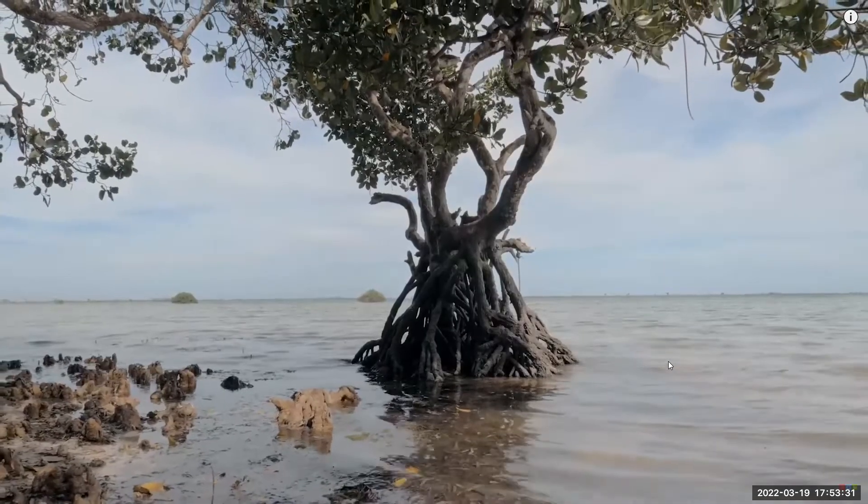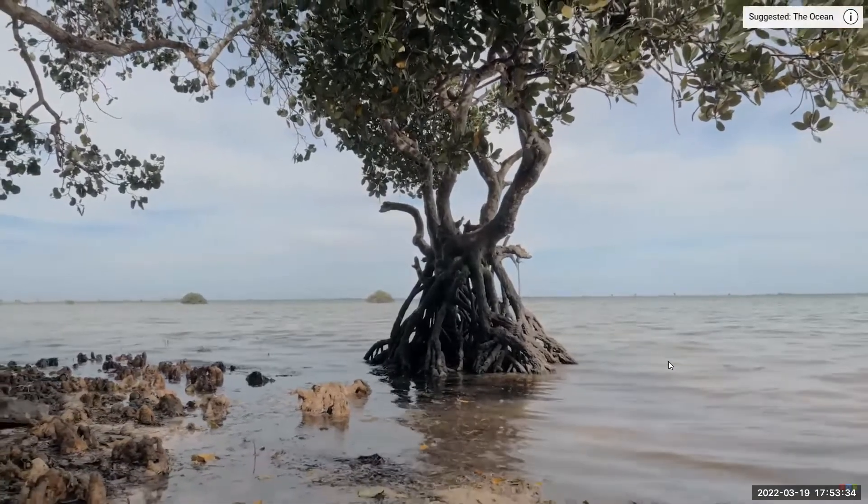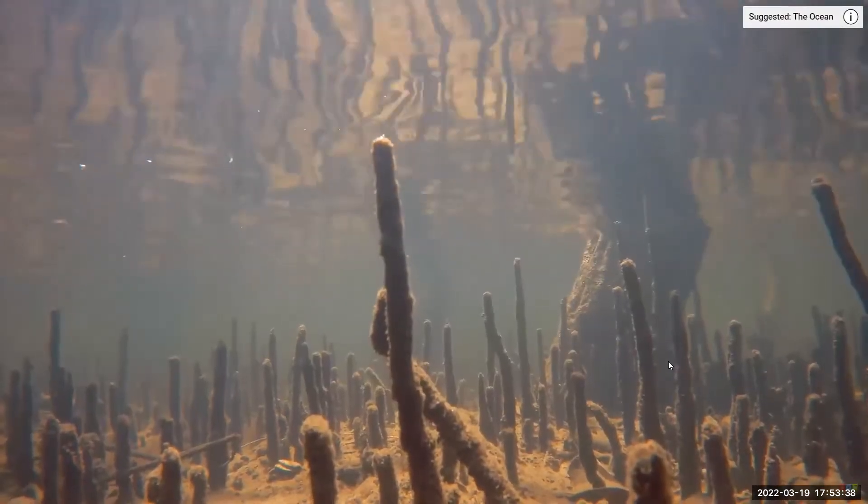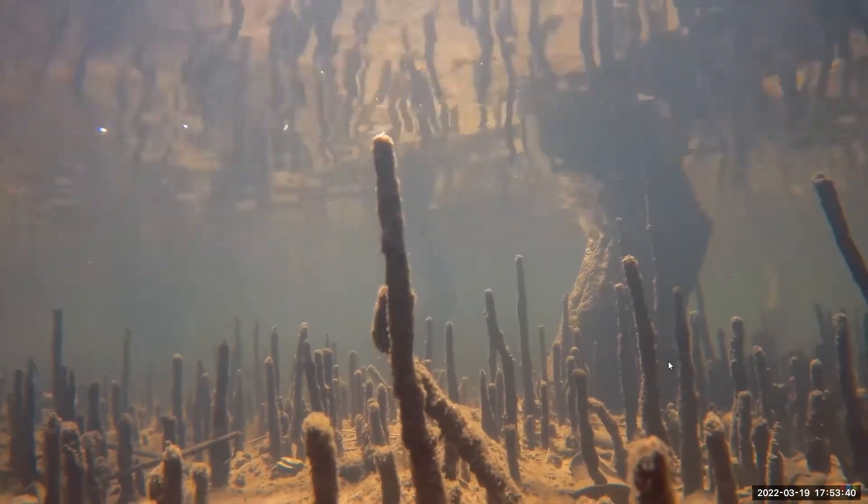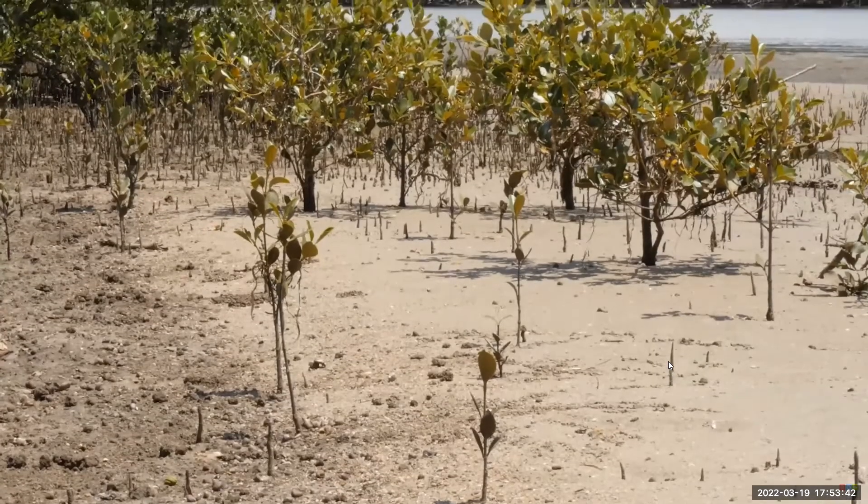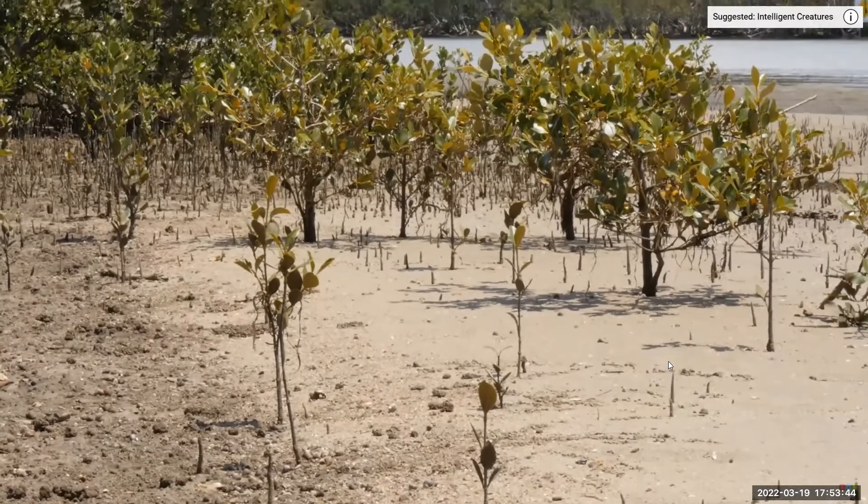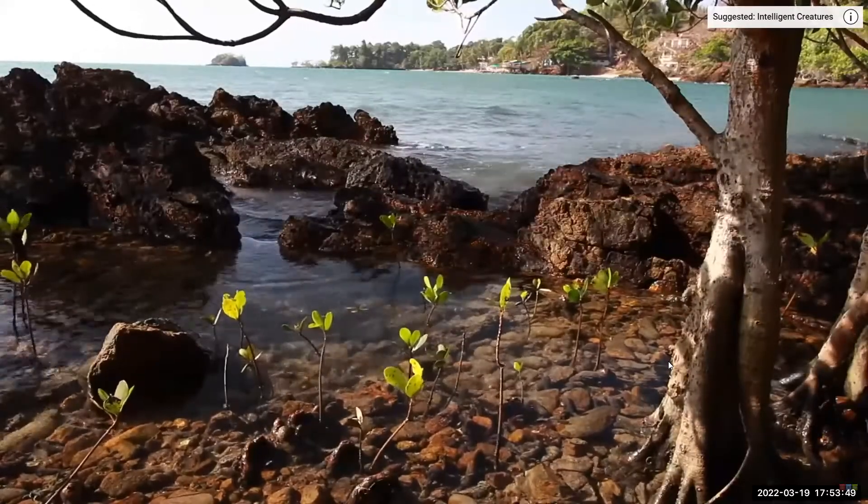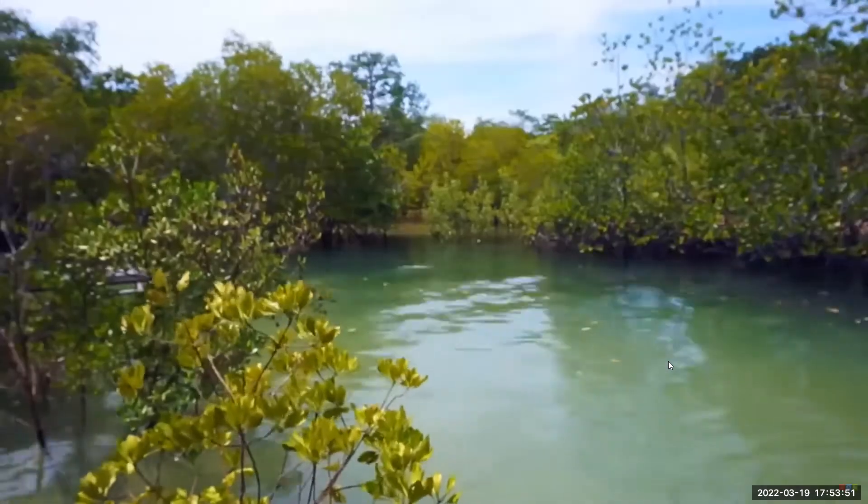Mangroves are plants that grow in intertidal regions in coastal areas. An intertidal region is submerged with salt water during high tides and exposed to the air during low tides.